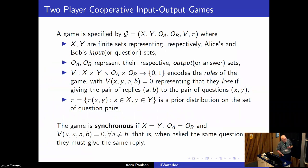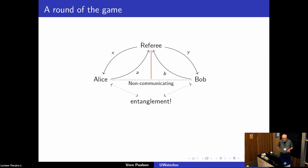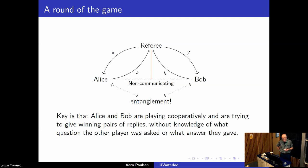Such a game is called synchronous if the question sets and answer sets are the same for both players, with the rule that any time they're given the same question, they must give the same answer or they lose. Each round, the referee gives Alice a question and Bob a question, and they reply — often with some entanglement, but they're non-communicating. The key point, which often bothers mathematicians, is that they're cooperating instead of competing — cooperating to give a correct answer to the pair, competing against the referee.